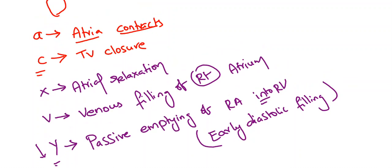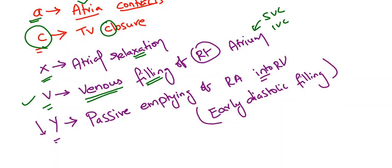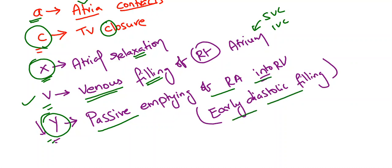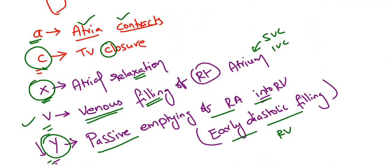To summarize: A means atrial contraction; C means closure of the tricuspid valve; X means atrial relaxation; V means venous filling of the right atrium — blood from the superior and inferior vena cava enters the right atrium, which is a positive wave; Y means passive emptying of the right atrium into the right ventricle, i.e. early diastolic filling of the right ventricle. Only X and Y are negative waves; A, C, and V are positive waves. These are the basics of jugular venous pulse.